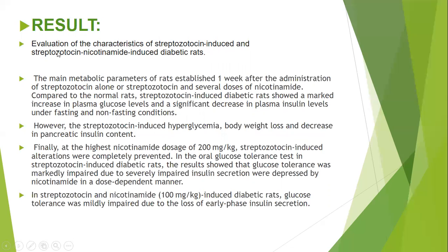Results show that streptozotocin alone produces severely diabetic rats. When given along with nicotinamide, mildly diabetic rats are produced. Streptozotocin-induced hyperglycemia causes body weight loss and decreased pancreatic insulin content. In streptozotocin-nicotinamide 100 mg/kg induced diabetic rats, glucose tolerance was mildly impaired due to loss of the early-phase insulin secretion.